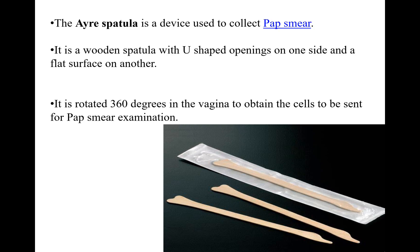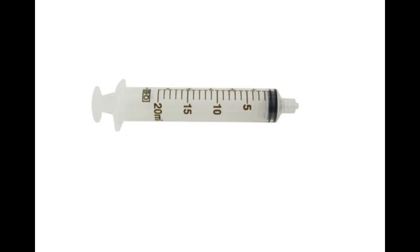This is a 20 ml syringe, but we can have 5 ml, 10 ml, or 2 ml syringes as well. Smaller ones — 5 ml or 10 ml — are used for blood collection for cell counts, PBS, biochemistry, or hormone studies. Larger ones are used for aspirating pleural effusion or ascitic fluid, which are then sent to us for examination. For FNAC — fine needle aspiration cytology — done in the cytology room, 20 ml BD syringes are also used.